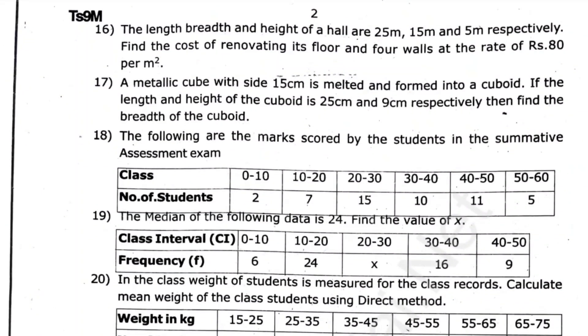The length, breadth and height of a hall are 25m, 15m and 5m respectively. Find the cost of renovating its floor and 4 walls at the rate of Rs. 80 per meter square.